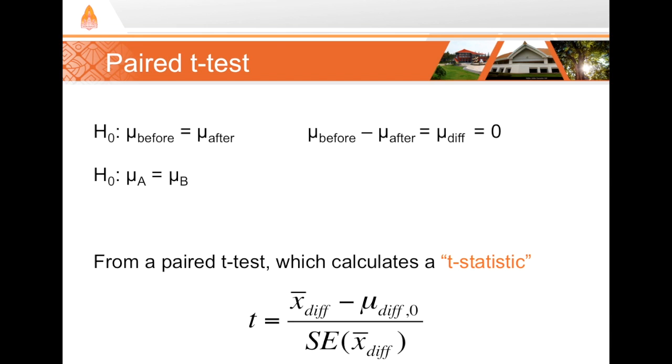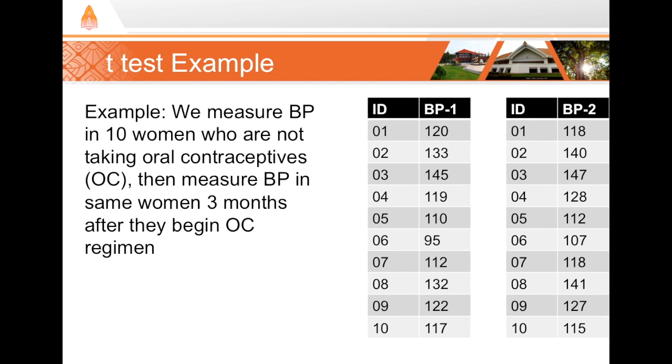From this we can compute our t-statistic. We do that by looking at the mean difference of our two samples. We compute the mean of that difference and we compare that to our null hypothesis mean difference. Then we compute the standard error of our differences and plug it into this formula to get our t-statistic.